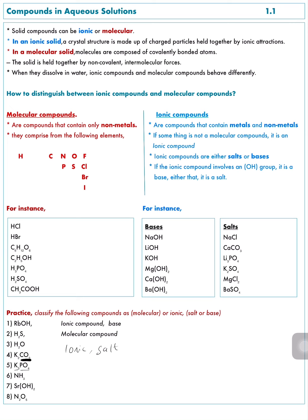Potassium phosphate, K3PO4: oxygen is in the table but potassium is not, therefore it is an ionic compound. There is no OH group, so its class is salt. Ammonia, NH3: N and H are both in the table, therefore ammonia is a molecular compound.